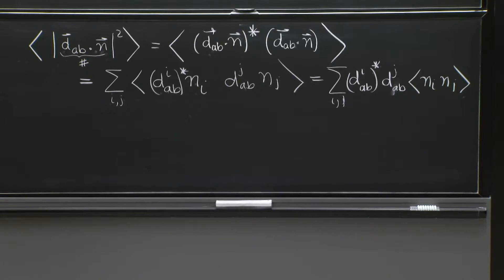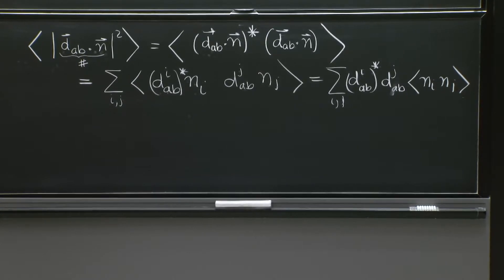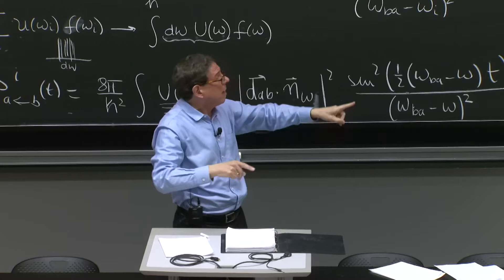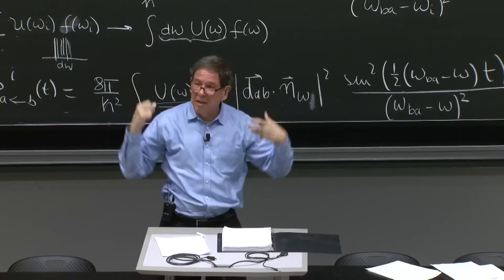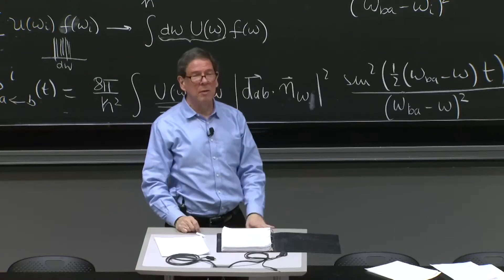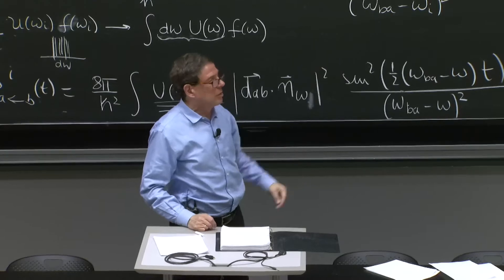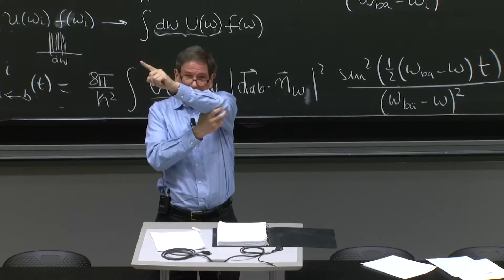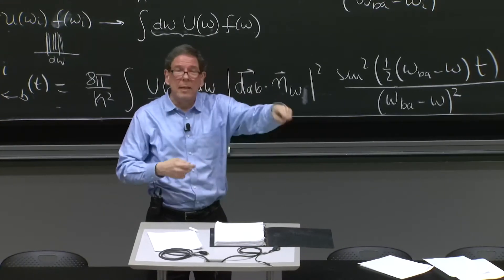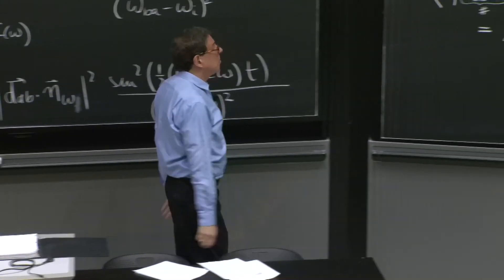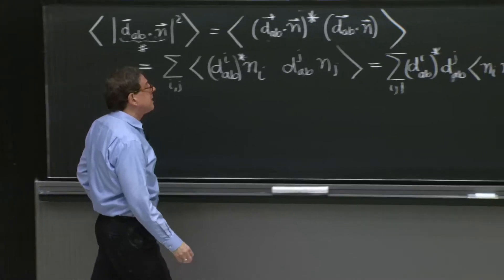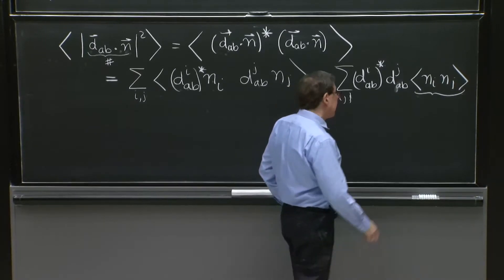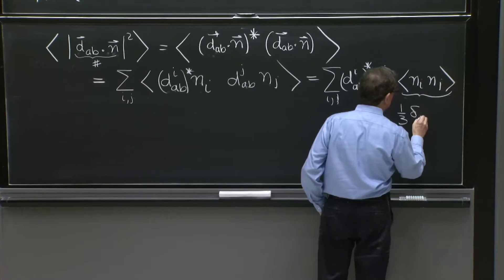This average, if you wish, you could simply do it. If you don't want to use symmetry arguments to do an average like that, you take a vector, parametrize it with theta and phi, and just do the integral over solid angle and divide by 4π. This should give you the same answer. If you're uncomfortable with what we're going to say now, you should do that. Because that average just means take the vector n, integrated over all directions, all solid angles, and average. So what is this n_i n_j?